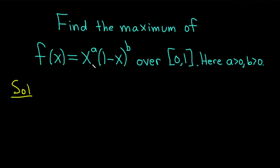To maximize a function on a closed interval like this, you have to first find the critical numbers, and then plug in the critical numbers and the endpoints — in this case 0 and 1 — into your original function. The biggest number we get is going to be the max.